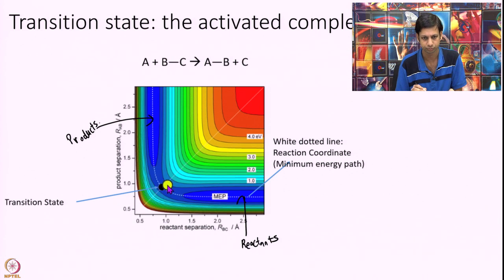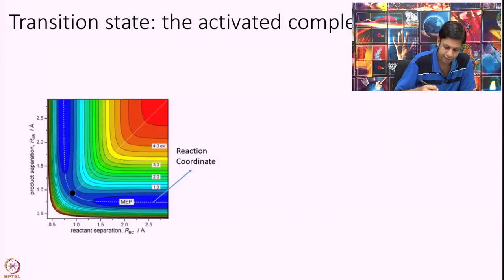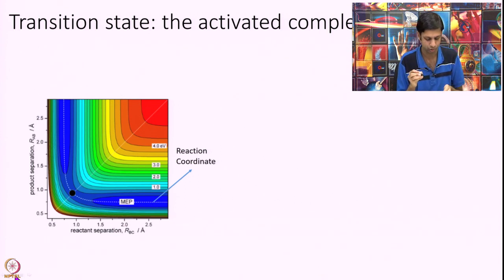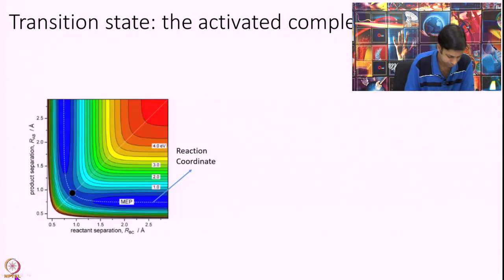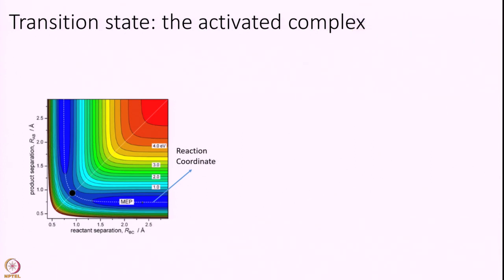And this point is my transition state, this point in the center here. So, let us just be more careful about this. Let us draw two lines. The line which is called the reaction coordinate essentially connects the reactant with the transition state with the product. This is called the reaction coordinate.